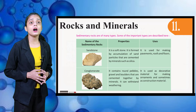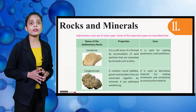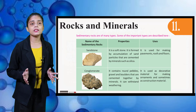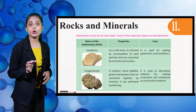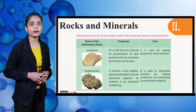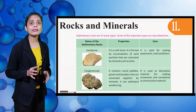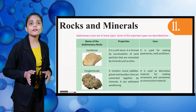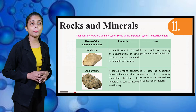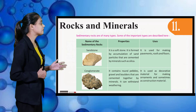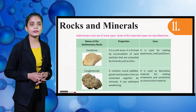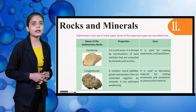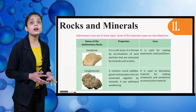Sedimentary rocks are of many types; some important types are described here. First is Sandstone. It is a soft stone formed by accumulation of sand particles cemented by minerals such as silica. It is used for making pavements, roofs, and floors. Next is Conglomerate. It contains round pebbles, gravel, and boulders cemented together by minerals. It can withstand weathering and is used as decorative material for making ornaments and sometimes as construction material.